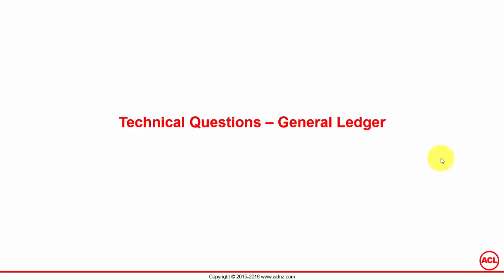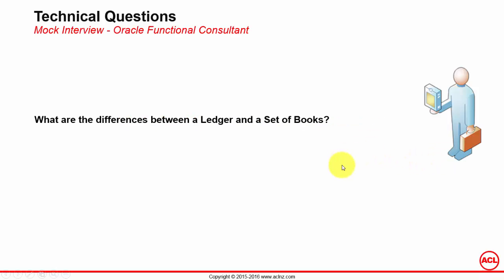We're going to first start with technical questions related to the General Ledger module. The first question is: what are the differences between a ledger and a set of books in Oracle Applications General Ledger? Remember, General Ledger is a base module in Oracle Applications, which must be set up first before you can do anything else or any other setups in related modules.